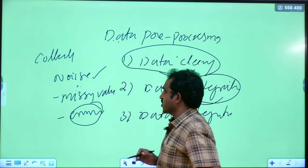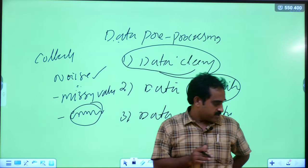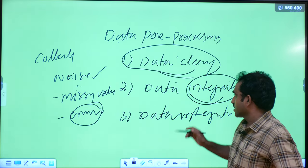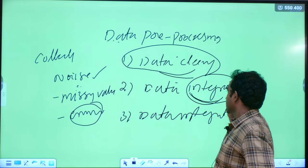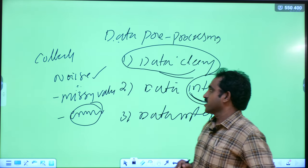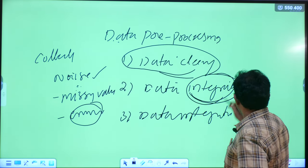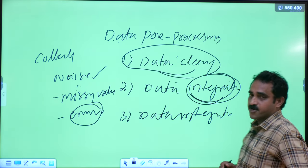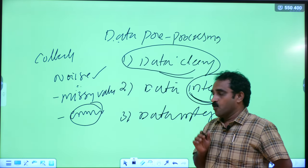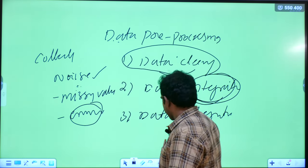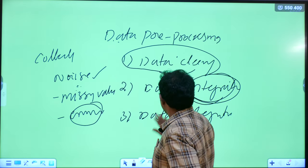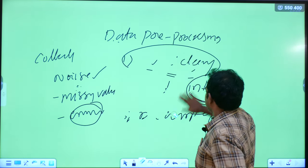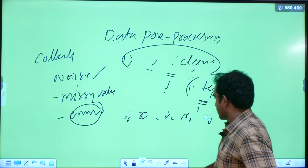In data integration, some attributes may have redundancies. Redundancy can be detected using data integration. There are numerical attributes and categorical attributes. One important statistical measure is used in data integration — whether the attributes are correlated or not.